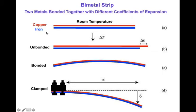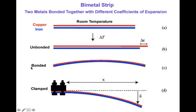Bimetallic strips are quite interesting and useful. We take two materials such as copper and iron, bond them together at room temperature, and cut them the same length. When temperature increases, copper expands at a greater rate than iron. If they were unbonded they'd simply be different lengths, but since they're bonded together, the strip bends — curving away from its fixed point as temperature rises.